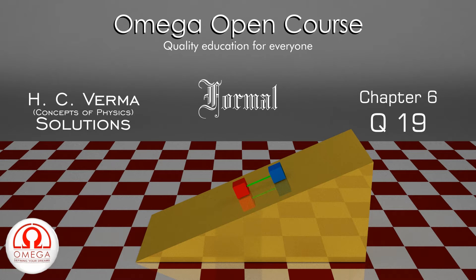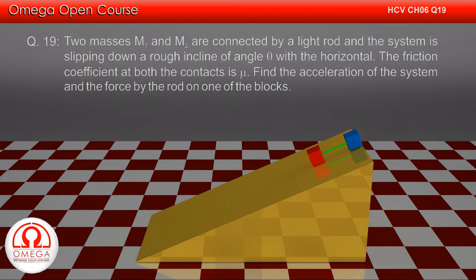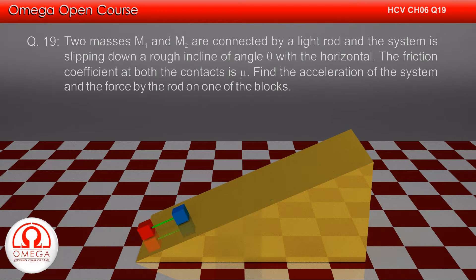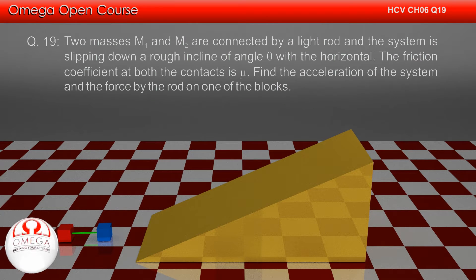H.C. Verma Chapter 6, Question Number 19. Two masses M1 and M2 are connected by a light rod and the system is slipping down a rough incline of angle theta with the horizontal. The friction coefficient at both the contacts is mu. Find the acceleration of the system and the force by the rod on one of the blocks.